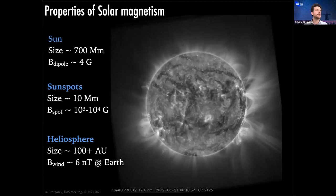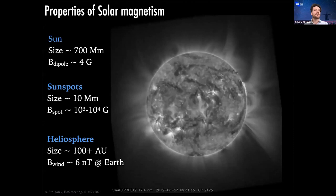When you speak about magnetism you can look at the Sun. The Sun is a ball of about 700 megameters and it has a dipolar field, a large-scale field of about four gauss at its surface. You have much stronger fields in the form of sunspots and active regions where you can reach fields of almost a Tesla. Then you can think about the heliosphere, structured by this magnetic field, with fields at Earth of about six nanoteslas.